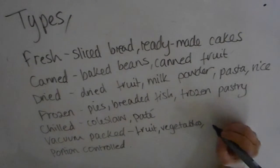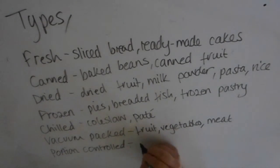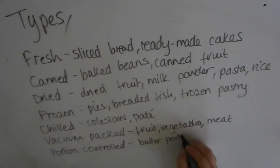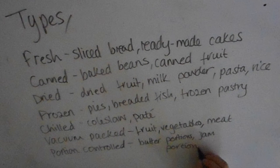You can also get vacuum packed convenience products - this can include fruit, vegetables, and meat. One of my year 10s today was using vacuum packed beetroot for a recipe, so that's an example. You can also get portion controlled convenience products like the butter portions and jam portions I spoke about earlier.